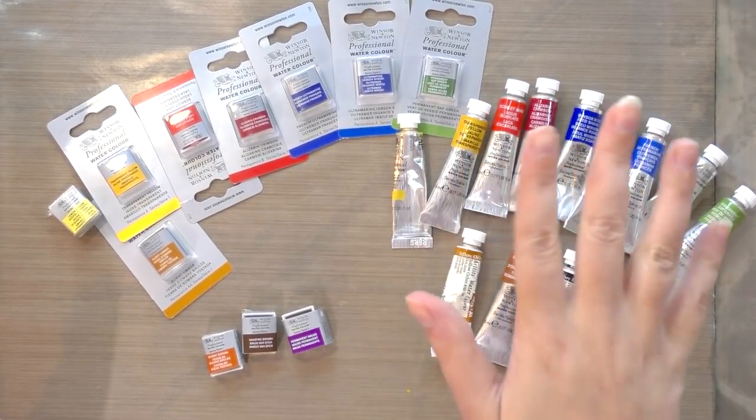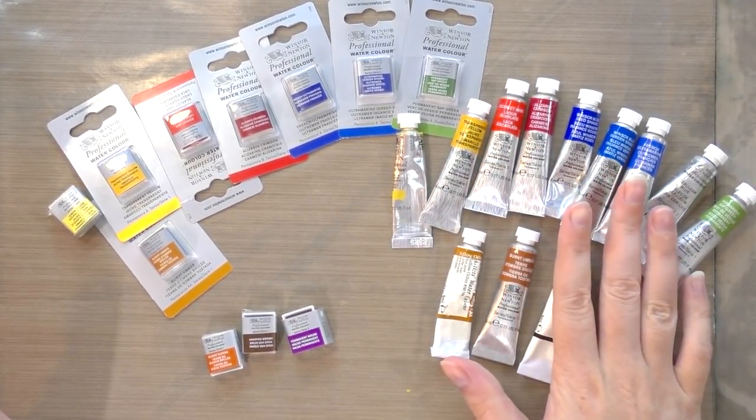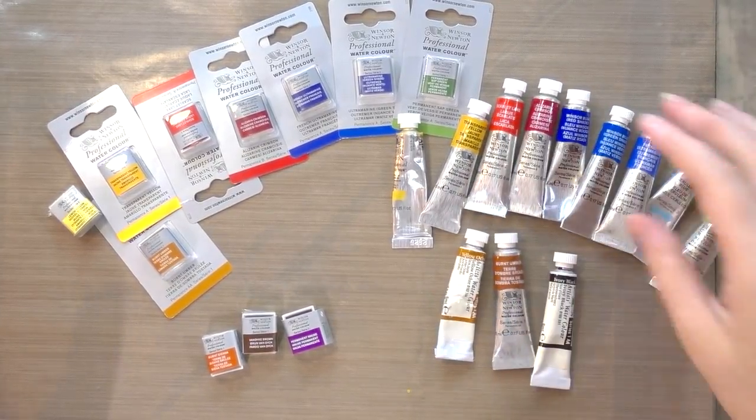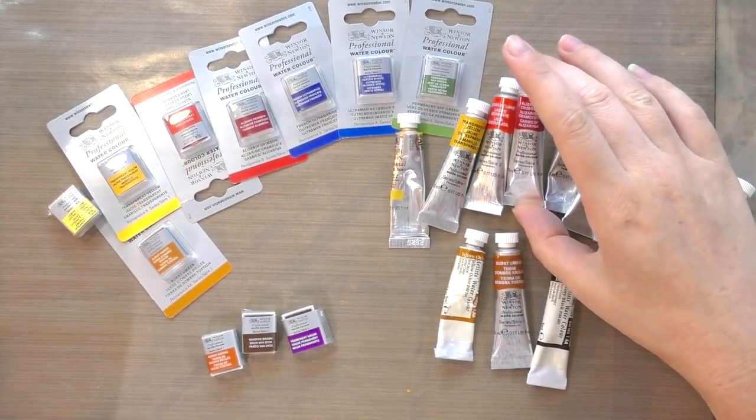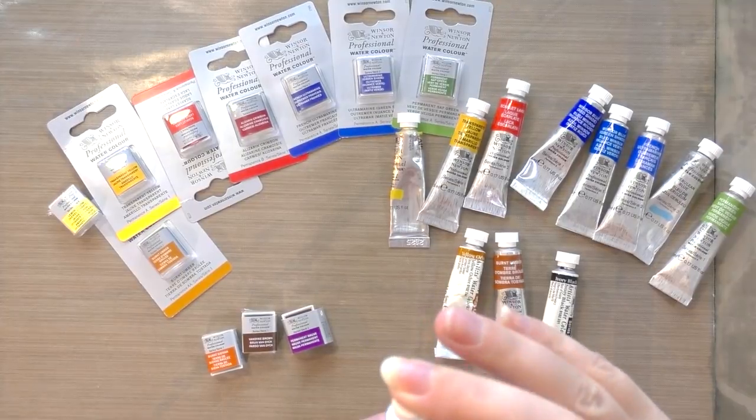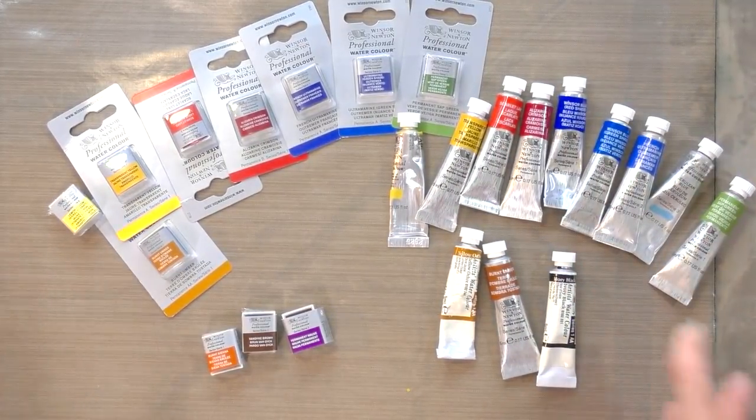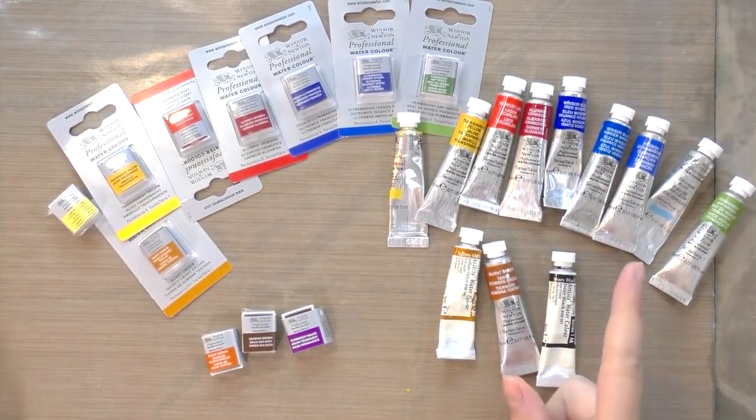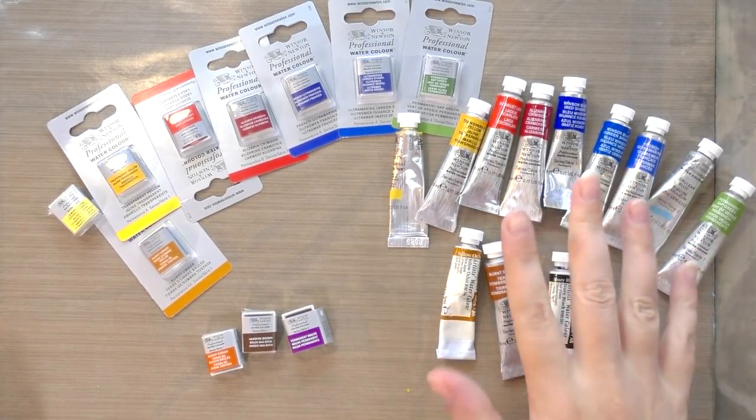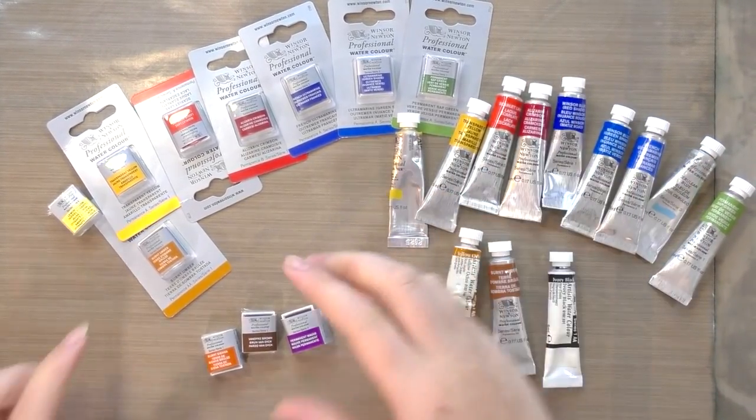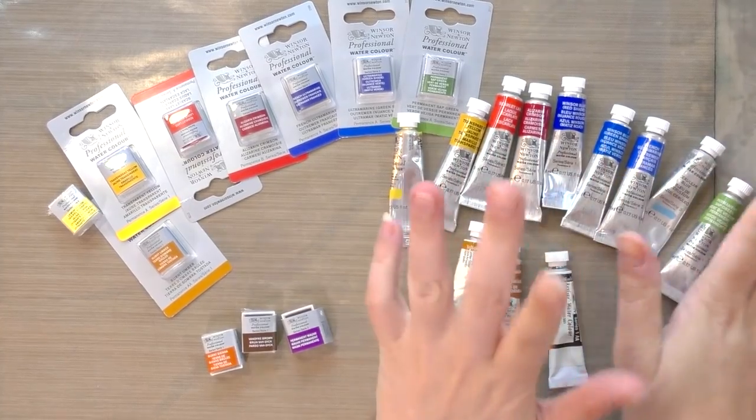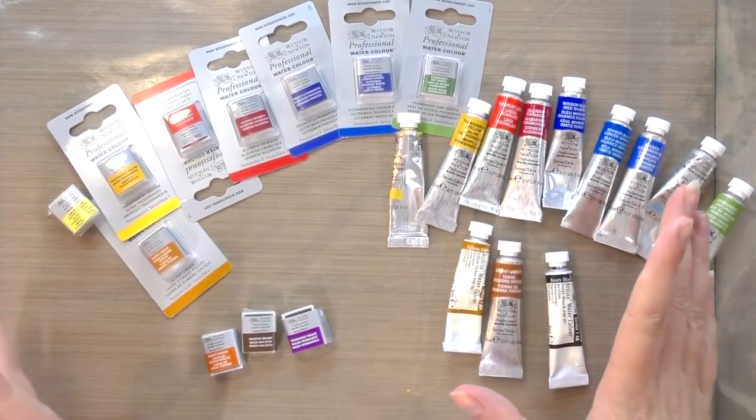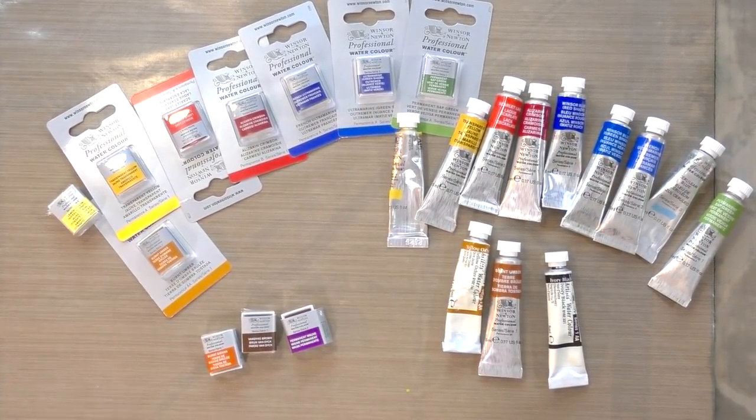But the thing about the thing, the reason I want to test this way is a half pan like this can cost anywhere from six to twelve dollars. A tube of watercolor, and this is Windsor and Newton professional, this is Cotman. A tube of their watercolor, these are the little five milliliter tubes, they cost about the same amount, but you can get about three half pan fills from these. So really these theoretically, if they perform the same, are more economical than buying the half pans.